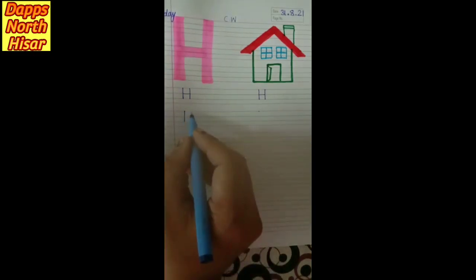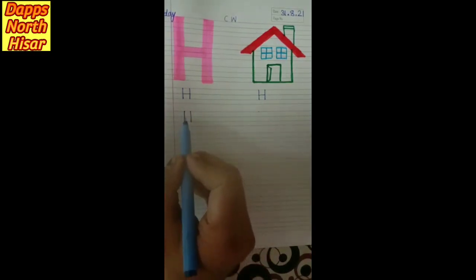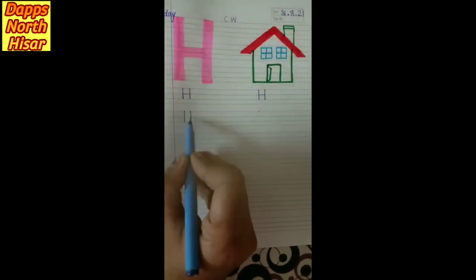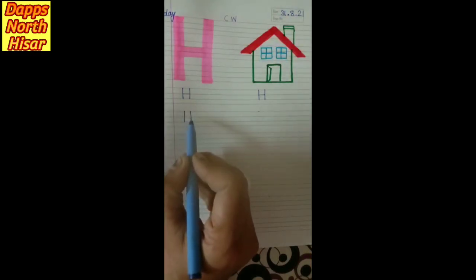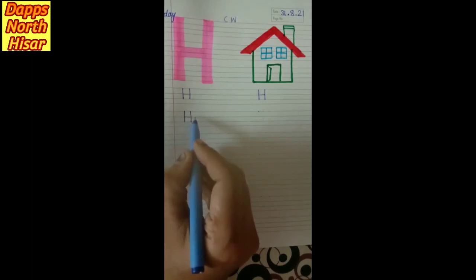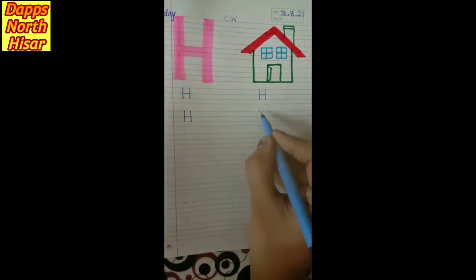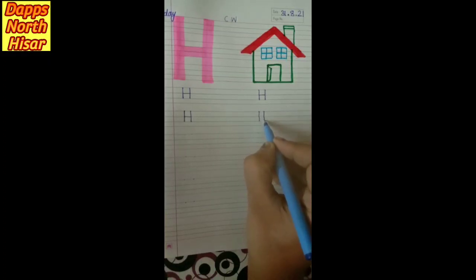Thore distance karke ek dousari straight line. Ye line already di gai hai copy mein, usi line pe aapne slipping line banani hai, dole line ko touch karte. Ye line cross nai karni hai. One standing line, second standing line and slipping line.